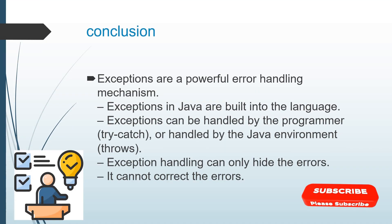Conclusions: exceptions are a powerful handling mechanism. Exceptions in Java are built into the language. Exceptions can be handled by the programmer using try-catch, or handled by the Java environment using throws. Exception handling can only hide the errors — it cannot correct the errors. Sometimes when you have exceptions, it will catch and hide them so that at compile time you will not have programmatic errors. But if you really have syntactical or runtime errors, you need to fix those errors, as they cannot be handled through exceptions — otherwise your program will fail.